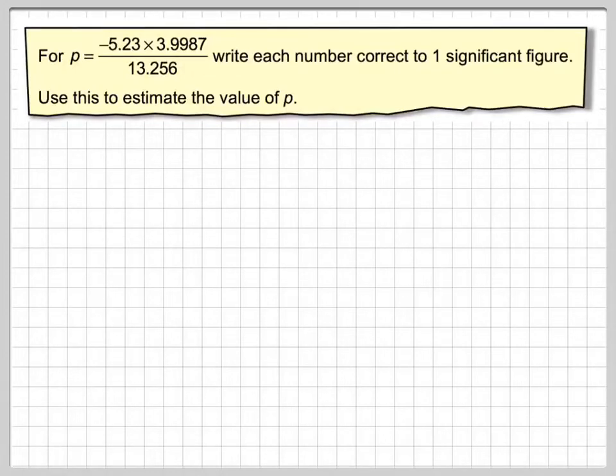Right, this is a question about estimation. It says: P is equal to minus 5.23 times 3.9987 divided by 13.256. Write each number to one significant figure and then use this to estimate the value of P.